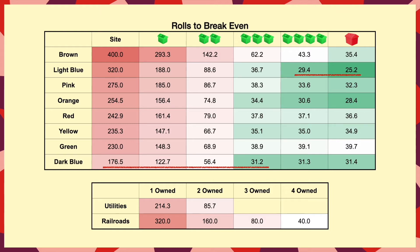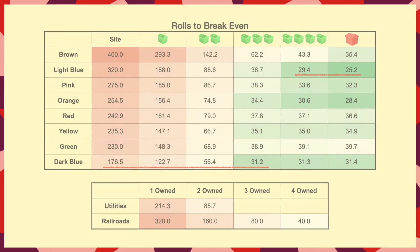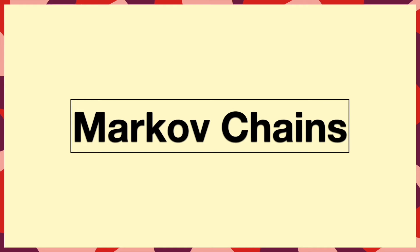The probability of us being on a particular square varies from property to property. That is, in the long run we visit some squares more often than others, and to figure out exactly what's going on we need to look at an area of maths called Markov chains.